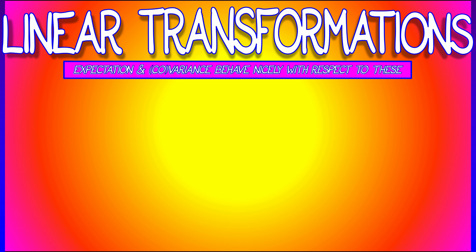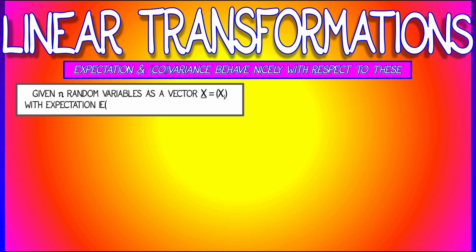So let's say that you're given n random variables, x1 through xn, put together into a vector x with expectation E of x and covariance matrix V of x.